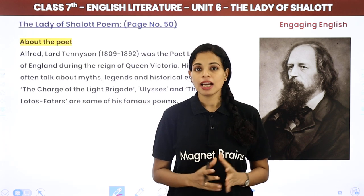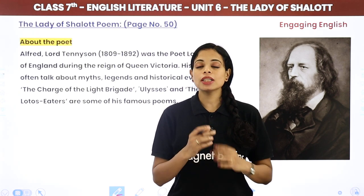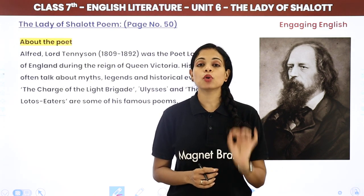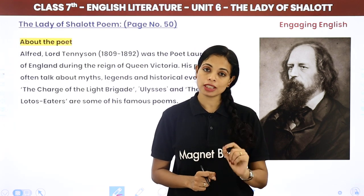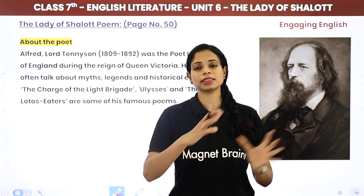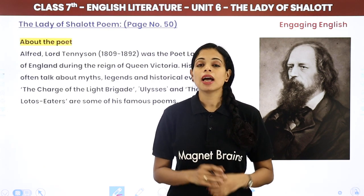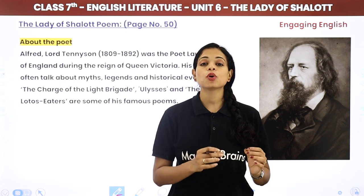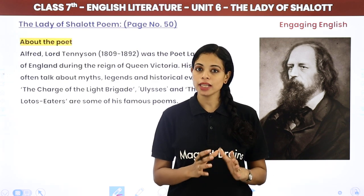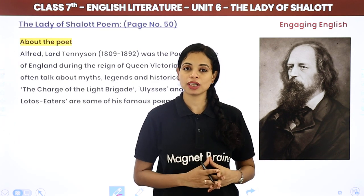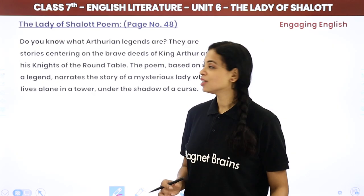One more thing — the word 'poem' can be pronounced as poem, poem, or poem. All three pronunciations are correct. The Australian pronunciation used in ICSC schools is 'poem', the British pronunciation is 'poem', and the American is 'poem'. So whichever way your teacher says it, you can say it like that. Now let's start with this poem.